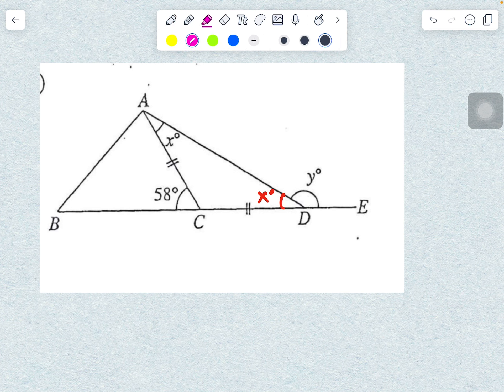The sum of two interior angles of triangle ADC is equal to the exterior angle at C.